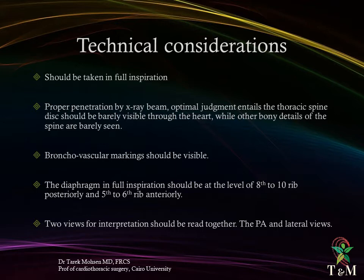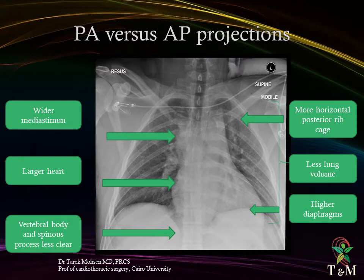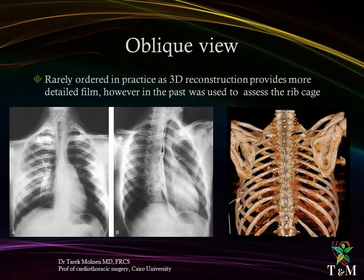Two views for interpretation should be read together: the posterior-anterior and lateral views. In PA view, the x-ray beam penetrates the patient from back to front; usually an erect film is obtained. In AP view, the beam penetrates from front to back; usually the patient is sitting or supine. The AP projection shows six differences compared to the PA projection: wider mediastinum, larger heart, less clear vertebral bodies and spinous processes, more horizontal posterior rib cage, less lung volume, and higher diaphragm.